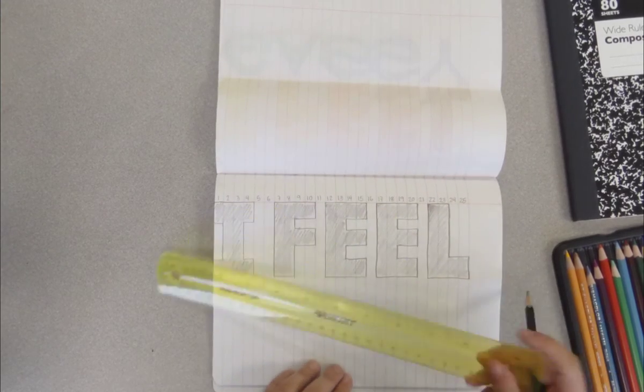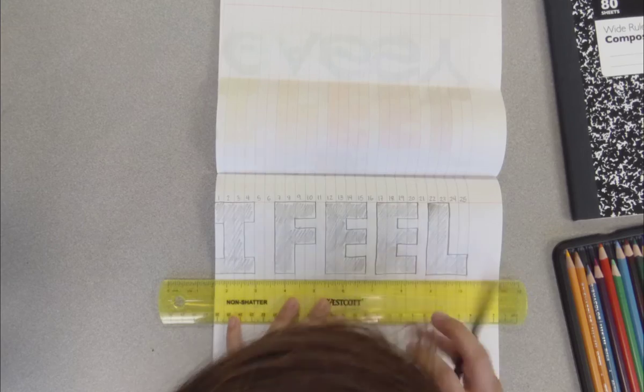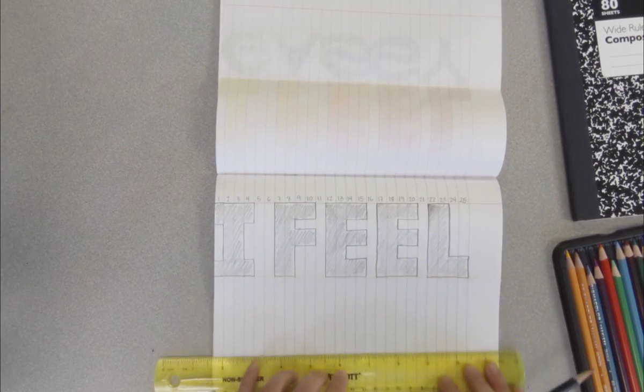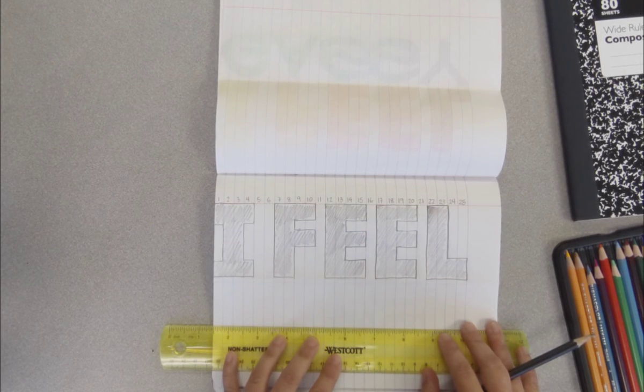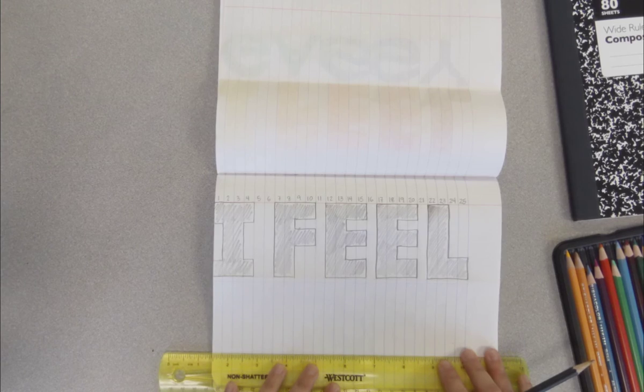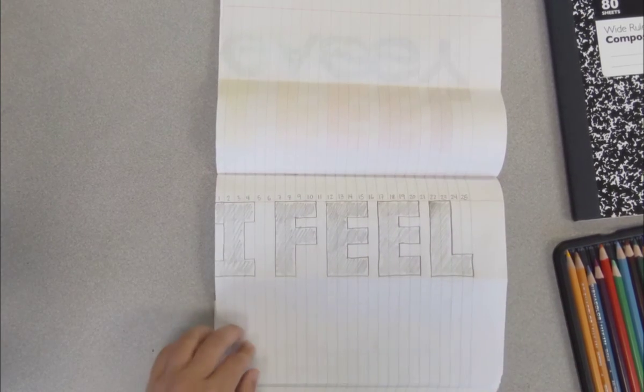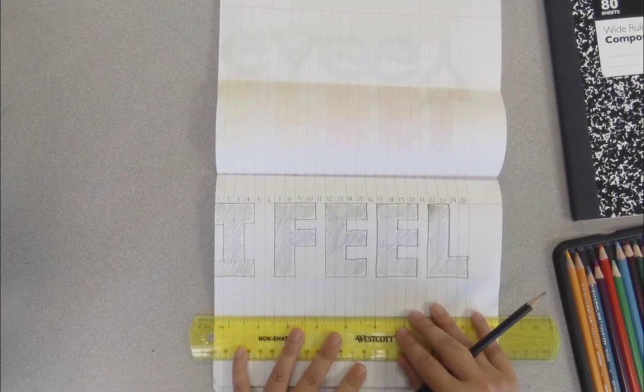But you can unfold your paper. If you have a ruler, you can just draw a little line right here. And maybe, depending on how tall you want your letters to be, just do another line. You could trace this faint red line here or you can go up a little bit further, just try to keep it perfectly straight.